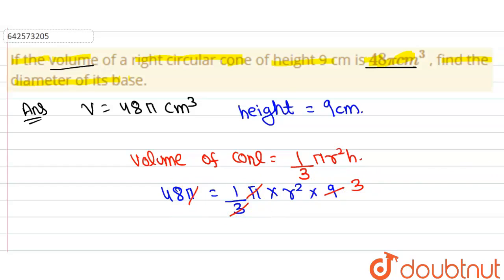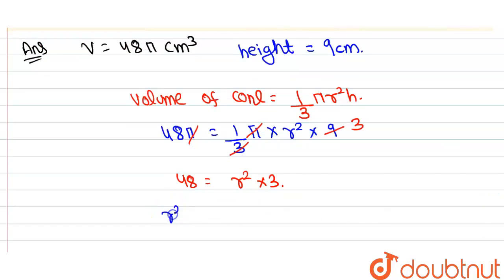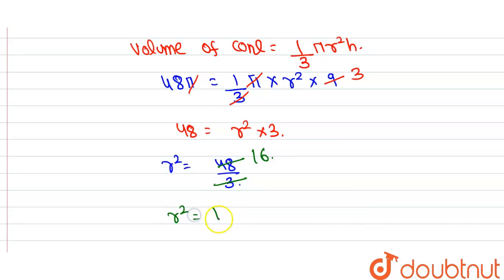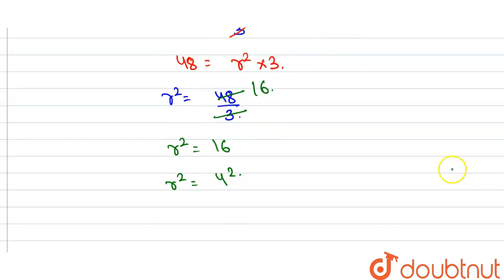So we have 48 equals r² into 3. Now r² can be written as 48 divided by 3. Here this 3 divides this 48 in 16 times, so the radius square value is equal to 16. 16 can be written as 4 square, and on comparing both sides we get the value of radius of base as 4.